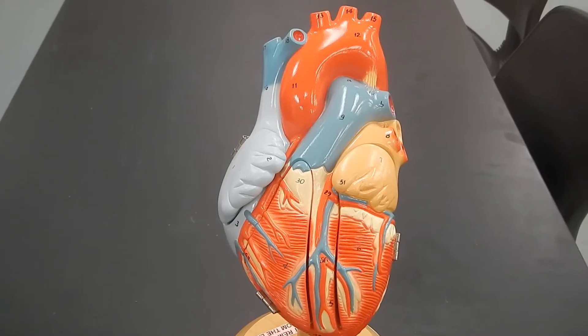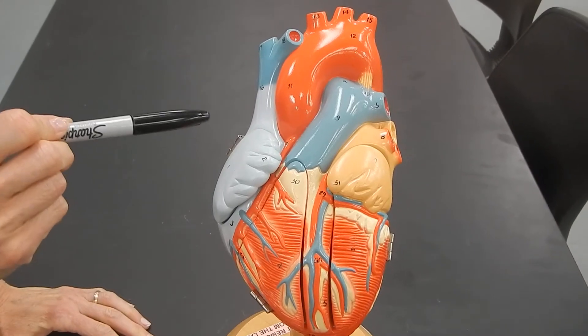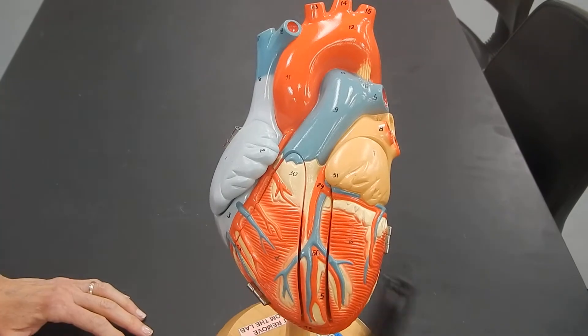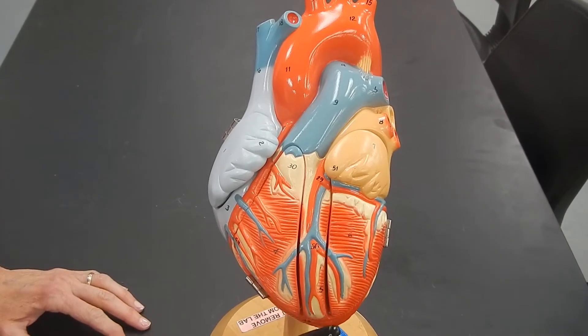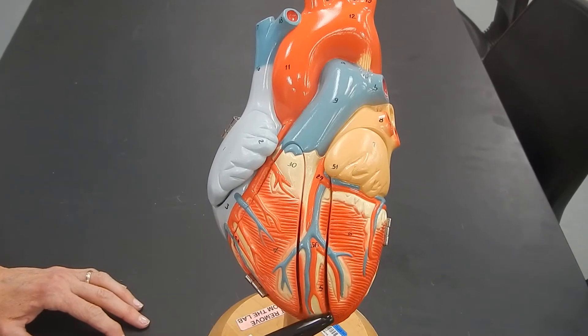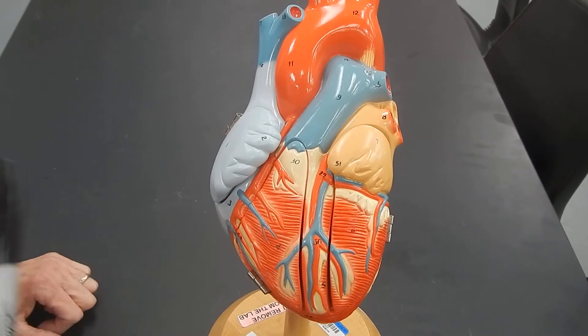This is the heart. This is the right side of the heart. This is the left side of the heart. The pointy part of the heart is called the apex of the heart. The heart has got four chambers.